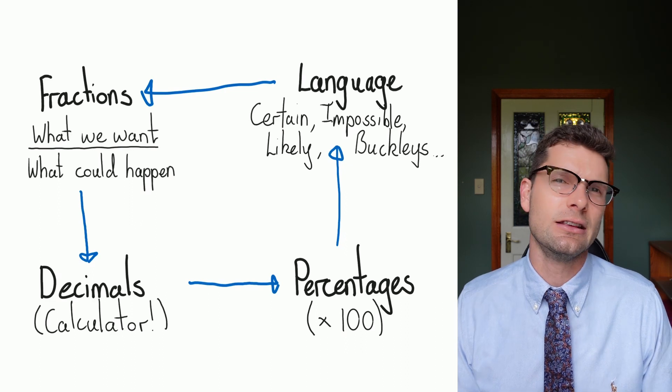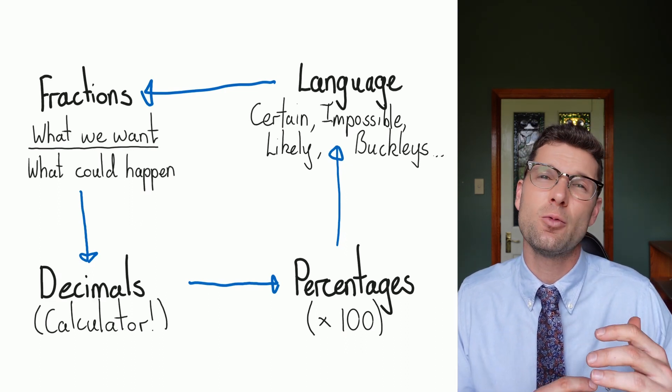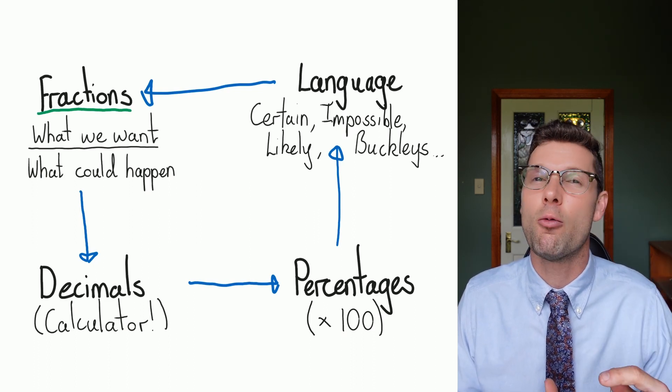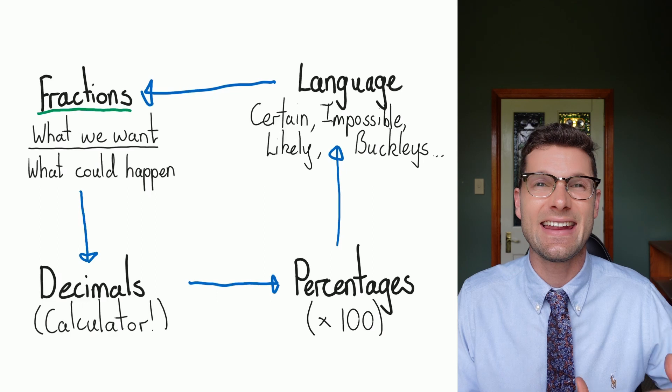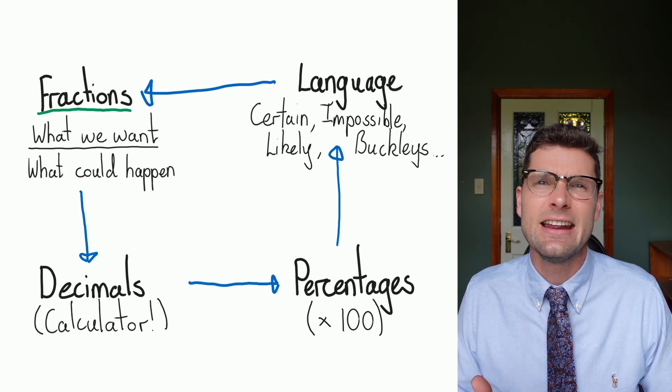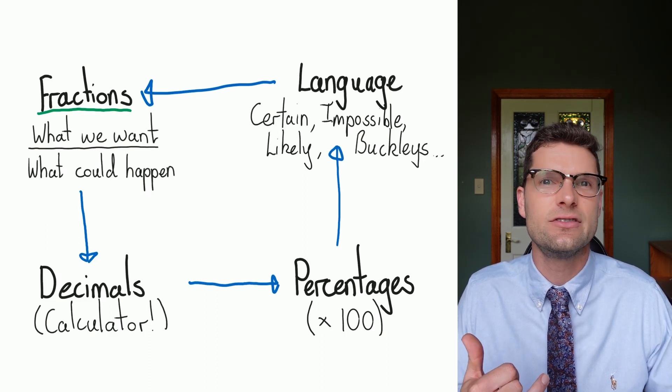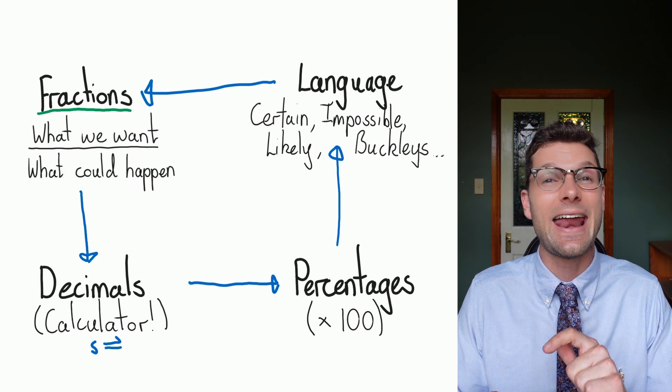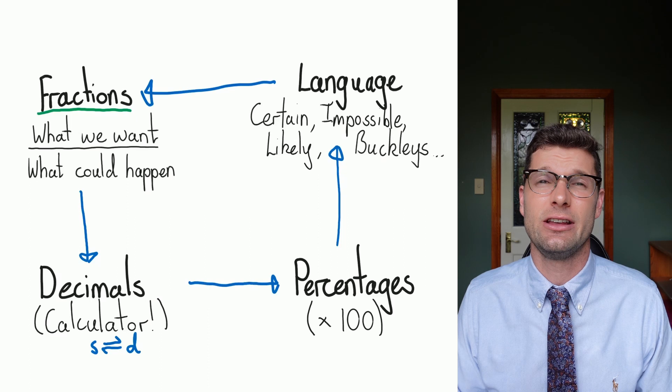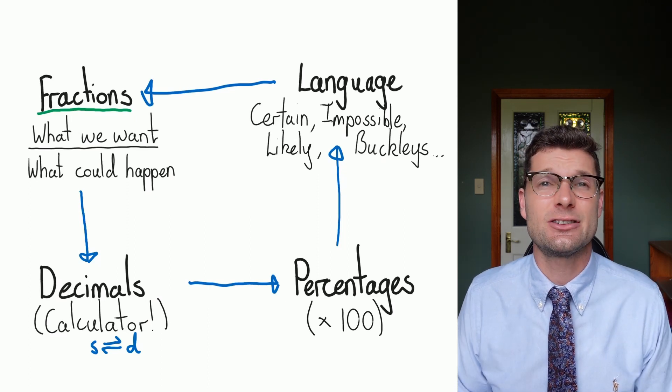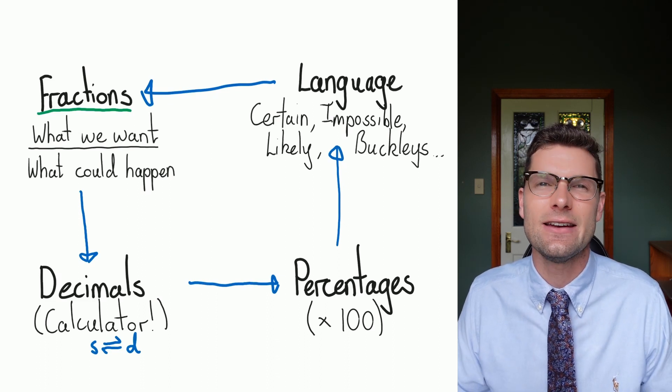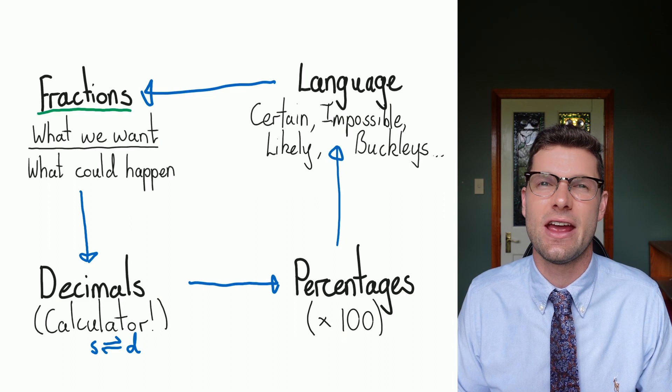Finally, the reason that probability is a little bit more difficult than the things that we've done before is that we've got to be able to turn fractions, which we know what they represent, what we want divided by what could happen. And we've got to turn that into a decimal. I would highly recommend using your calculator for as much of these as you can. It is really good to know your quarters, your halves, your three quarters, all of that stuff. But if you just hit that SD button on your calculator, it will give you a decimal for a fraction. And then if you need to give your answer as a percentage, just have it in the decimal form on your calculator, and then times by 100. And that will give you the percentage every time.